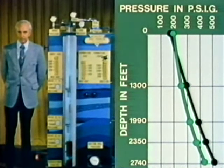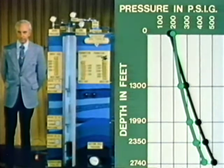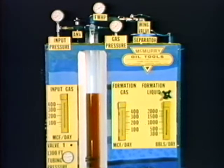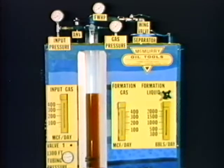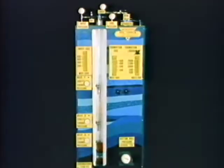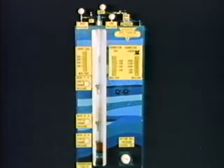In film number one, we saw how a change in gas rate affected the flowing pressure gradient of the well. In film number two, we found that a reduction in gas rate below a certain point would allow a well to die. In this third film in the series, we will study the effect of gas rates and depth of injection on well performance.